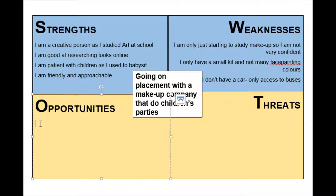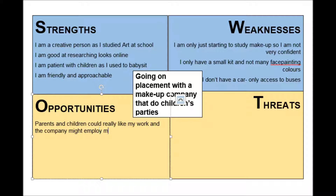Carrying on, we are moving into the opportunities and threats. Over on the left-hand side we're thinking about what could go right — what are the positives that could happen. This person is writing down that the parents and children might really like their work, which might even lead to getting a job in the future — a really positive outcome of the placement. She's also putting down that she could get some good photos for her portfolio, which would be great evidence.